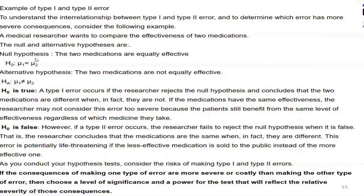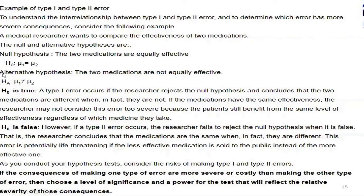Now, how is this going to affect type 1 error and type 2 error? Suppose our null hypothesis is true — that is, the effectiveness of the two medicines is the same. But the researcher, mistakenly, based on the sample data, concludes that the effectiveness of the two medicines is not the same. He made a mistake — he rejected the null hypothesis when it is actually true. But this mistake is not so severe, because he said the two medicines' effects are not the same, when they actually are.